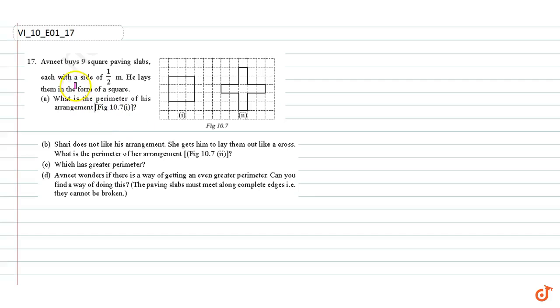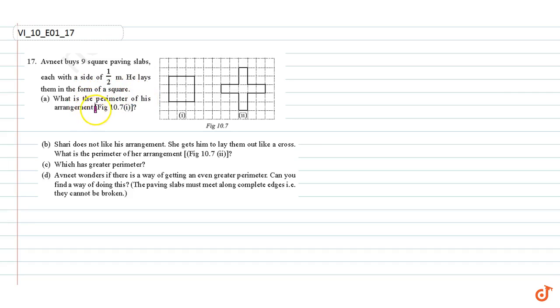In this question, it is given that Avnit buys nine square paving slabs, each with a side of half a meter. He lays them in the form of a square. What is the perimeter of his arrangement?